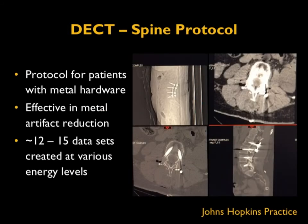Dual energy CT spine protocols have unique advantages for patients with metal hardware. Scanning on a dual source CT provides data sets that can effectively remove metal artifacts. Some streak artifacts can be avoided by creating data sets at various energy levels — at certain levels, beam hardening artifacts are diminished. This can result in 12 to 15 data sets created at various energy levels.